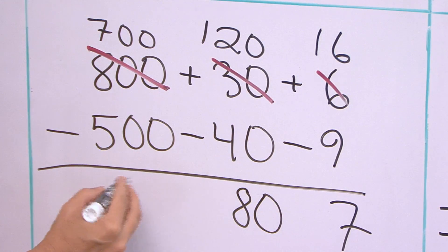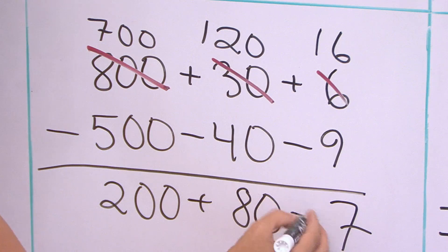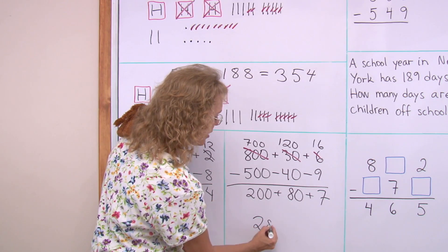And then seven hundred minus five hundred, two hundred. So the final answer is two hundred eighty-seven.